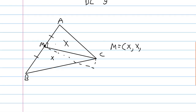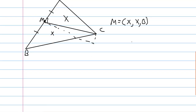Since M is on the line AB, the area of triangle AMB is a degenerate triangle, so its area is 0, meaning the third coordinate is 0. We know the sum of the coordinates must be 1, so x plus x equals 1, which means x equals one half. Therefore, the coordinates of the midpoint of AB are (1/2, 1/2, 0).